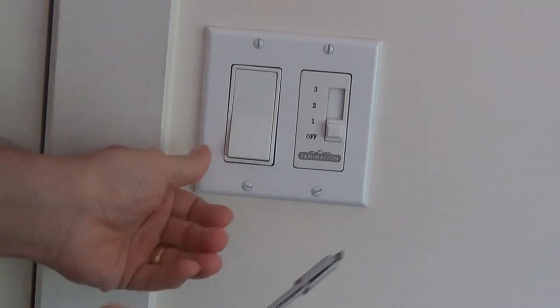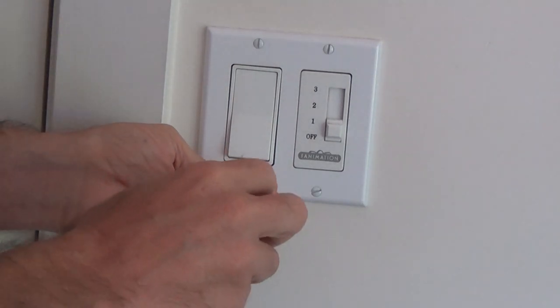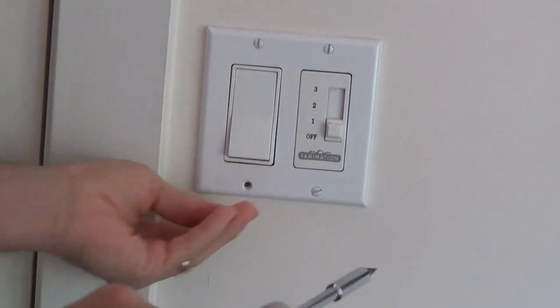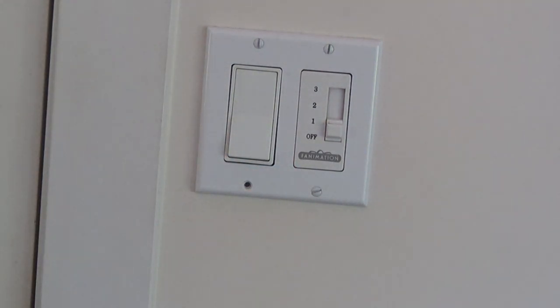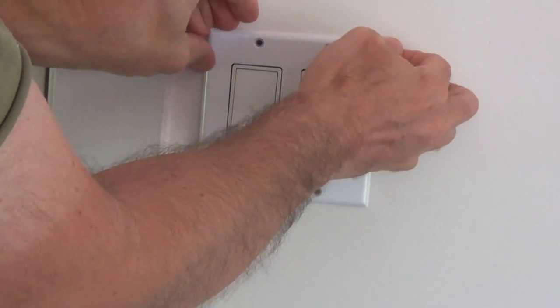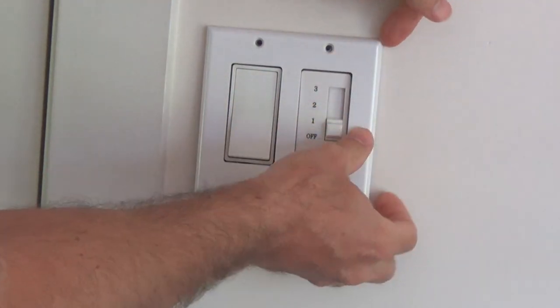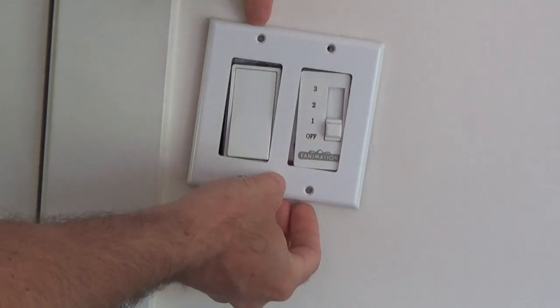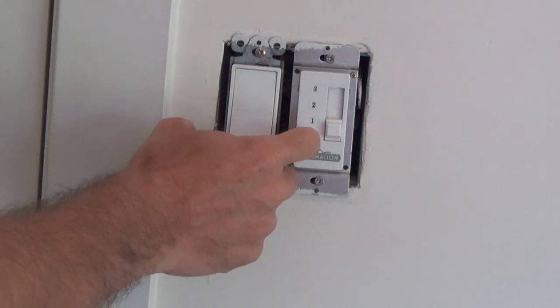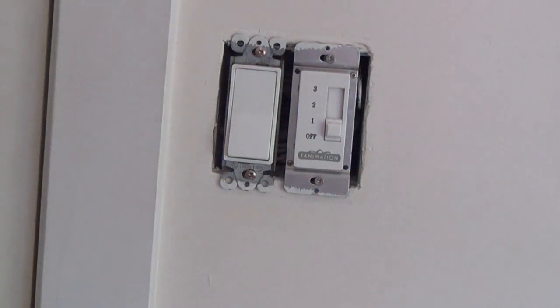So the first step is just to take off the face plate. We have a flathead screw. Take these four screws. And then just take the plate off. Sometimes these can be kind of stuck on because of paint, but just be careful. And there you have, you have the fan component and you have the light switch itself.